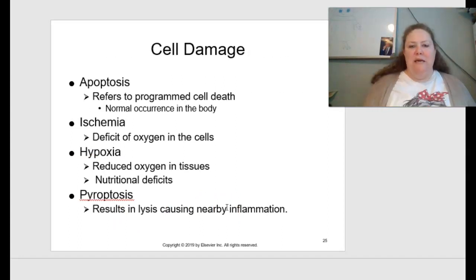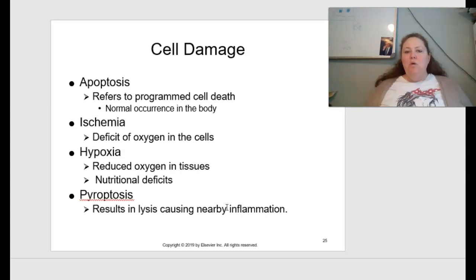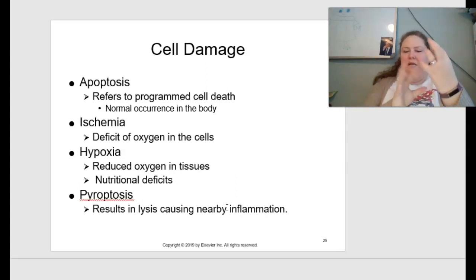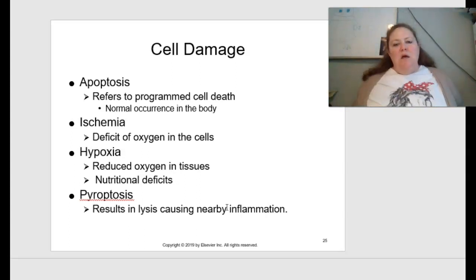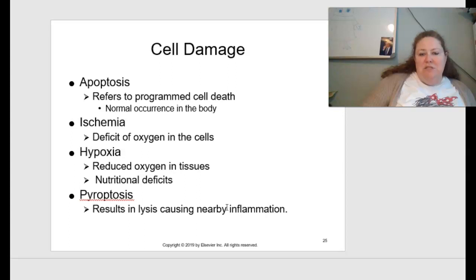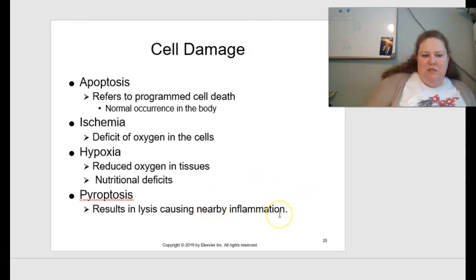Regarding cell damage, apoptosis refers to programmed cell death — a normal occurrence in the body. For example, when we're born our fingers have webs between them, but apoptosis eliminates that webbing so our fingers are separated. Ischemia is a deficiency of oxygen within the cell, which can cause cells to die. Hypoxia is reduced oxygen in tissues, causing nutritional deficits. Pyroptosis results in lysis — the bursting apart of a cell — which causes nearby inflammation.